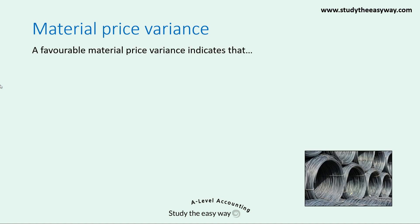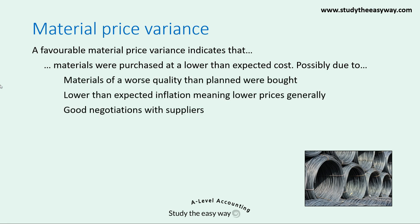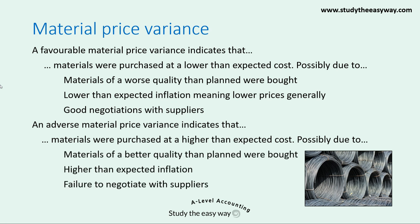A favourable material price variance indicates materials were purchased at a lower than expected cost. Possible reasons include: materials of worse quality than planned were bought; lower than expected inflation meaning prices are generally lower; or good negotiations with suppliers. An adverse material price variance indicates materials were purchased at a higher than expected cost. Possible reasons include: better quality materials were bought; inflation was higher than expected; or a failure to negotiate successfully with suppliers.